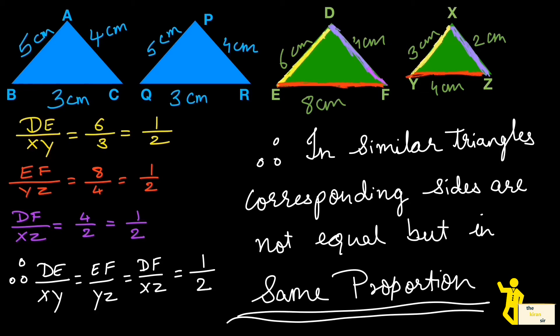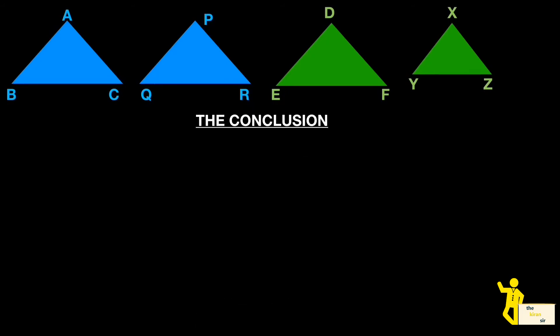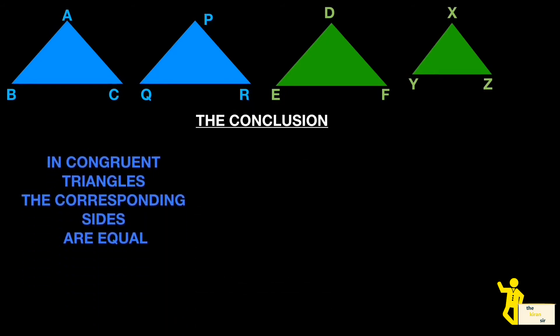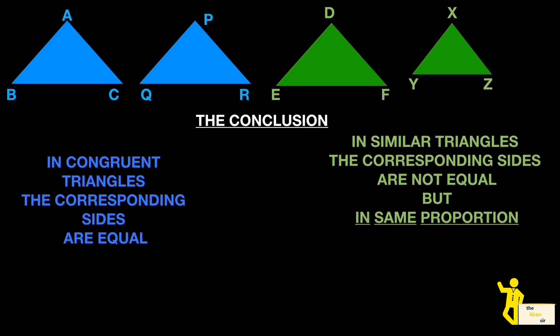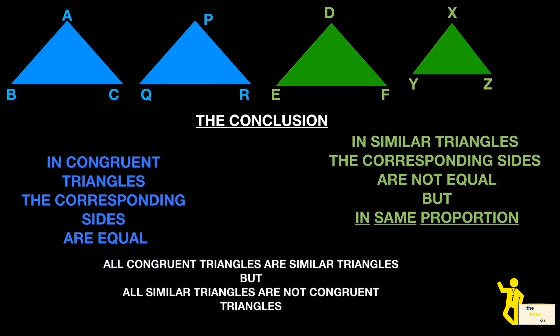The final conclusion: in congruent triangles, corresponding sides are equal, whereas in similar triangles, corresponding sides are not equal but are in the same ratio. Also remember one important point — all congruent triangles are similar triangles, but all similar triangles are not necessarily congruent triangles. That completes the concept of the difference between congruent and similar triangles.